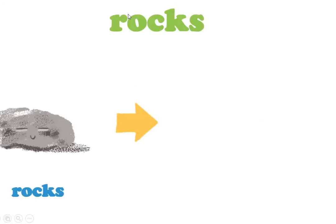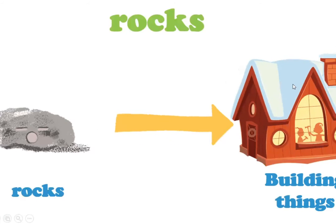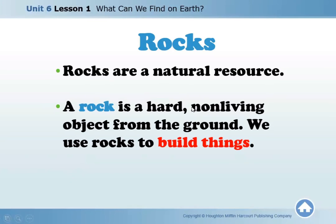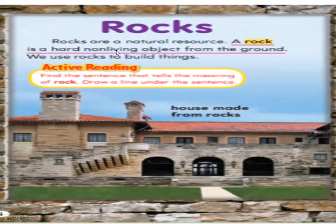Another natural resource is rocks. We make building things from rocks. We build libraries, schools, and our homes using rocks. A rock is a hard, non-living object from the ground. We use rocks for building things.